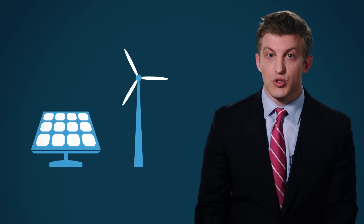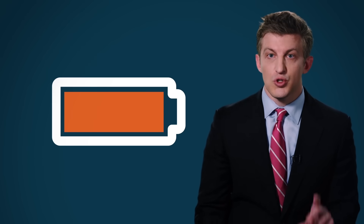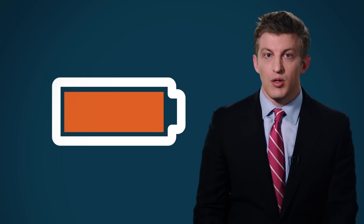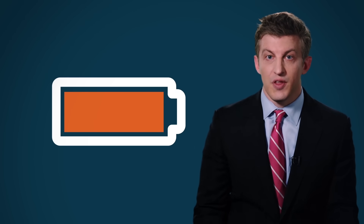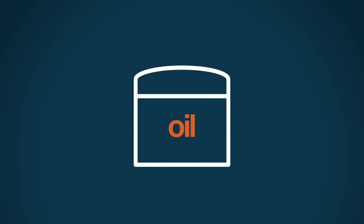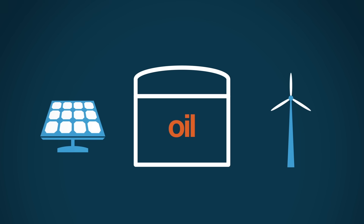This isn't exactly a newsflash, but the sun doesn't shine all the time. And the wind doesn't blow all the time. The only way for solar and wind to be truly useful would be if we could store them so that they would be available when we needed them. You can store oil in a tank. Where do you store solar or wind energy? No such mass storage system exists.